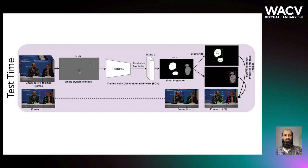The locations of speaking pixels and not-speaking pixels are clustered individually using the affinity propagation algorithm. For each cluster — recall that each cluster is either speaking or not speaking — we find a bounding box which tightly surrounds it. Finally, the locations of bounding boxes are projected onto the 10 RGB frames with the predicted voice activity labels.